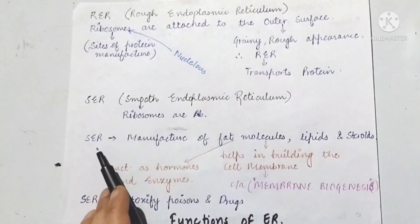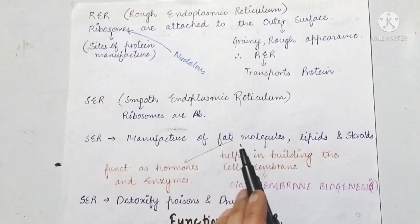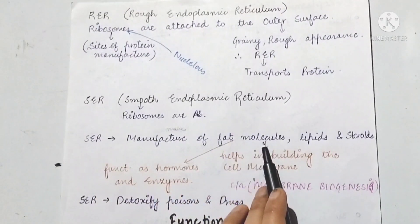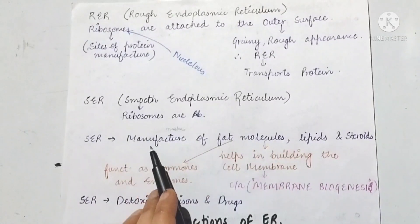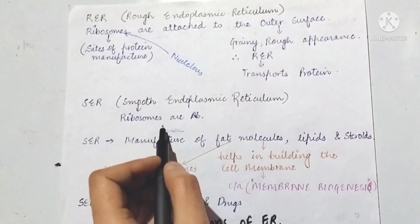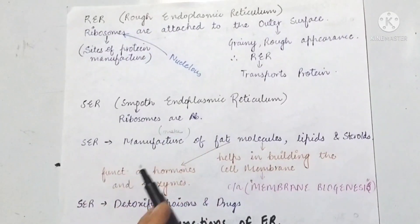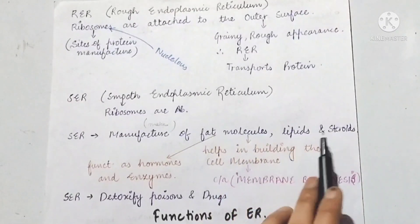Smooth endoplasmic reticulum is involved in the manufacture of fat molecules. It makes fat molecules — lipids.